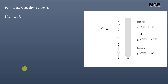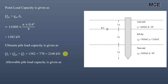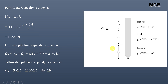The point load capacity = unit point resistance × cross-sectional area of the pile = 11,000 × π × (0.4)² / 4 = 1,382 kN. The ultimate pile load capacity = point load capacity + skin friction capacity = 1,382 + 778 = 2,160 kN. The allowable pile load capacity = ultimate load capacity / factor of safety = 2,160 / 2.5 = 864 kN.